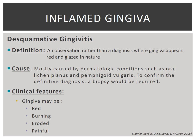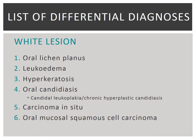I will now be passing on to Raymond, who will be discussing the list of differential diagnosis for white lesions. As described by Harrison, the clinical appearance of the oral lesion is white in colour. In consideration of the patient's good systemic and dental health, the differential diagnosis has been devised to include certain leukoplakias. They are as follows: oral lichen planus, leukoedema, hyperkeratosis, oral candidiasis — specifically candidal leukoplakia, also known as chronic hyperplastic candidiasis — carcinoma in situ, and finally, oral mucosal squamous cell carcinoma.